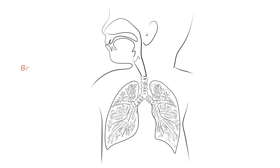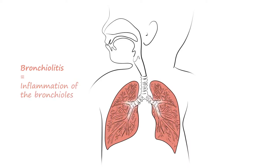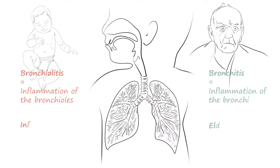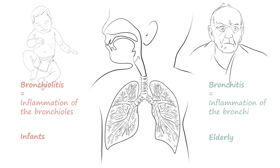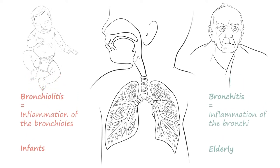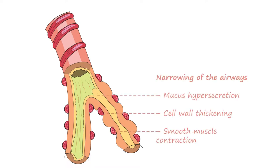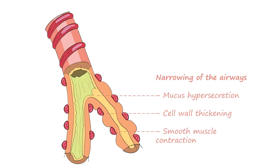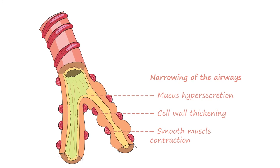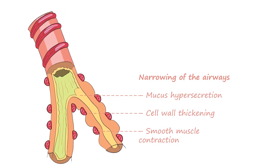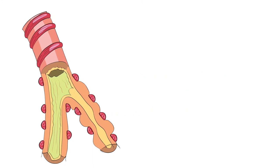Bronchiolitis is inflammation of the bronchioles. Something similar called bronchitis is inflammation of the bronchi and typically affects older people who smoke, not infants. In bronchiolitis, the changes include narrowing of the airways due to mucus hypersecretion, cell wall thickening, and smooth muscle contraction. These findings are also seen in patients who have asthma.